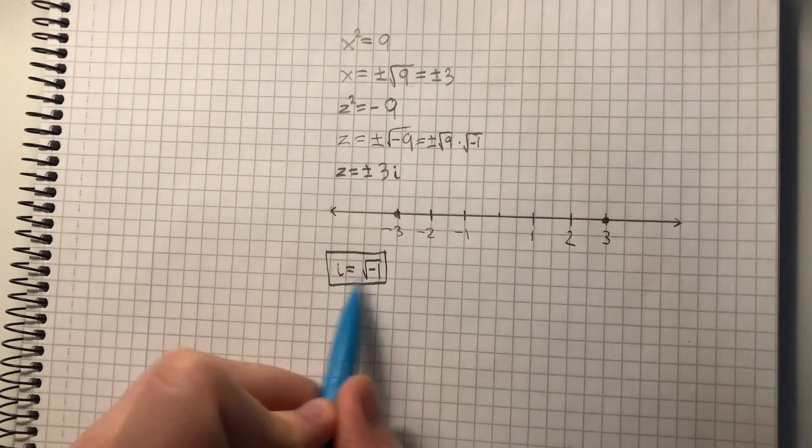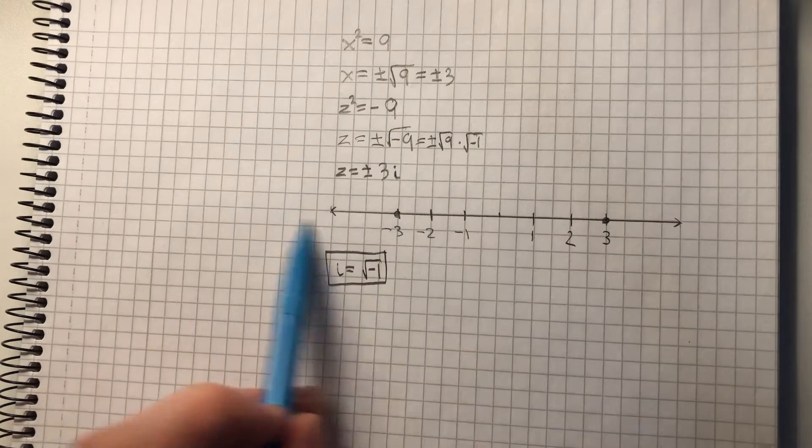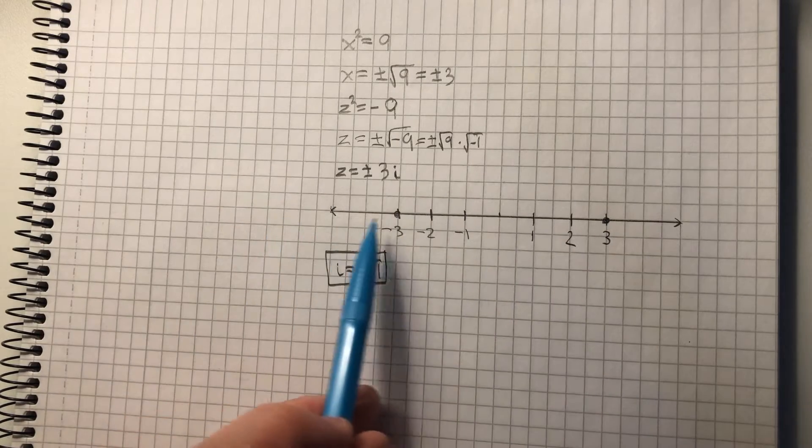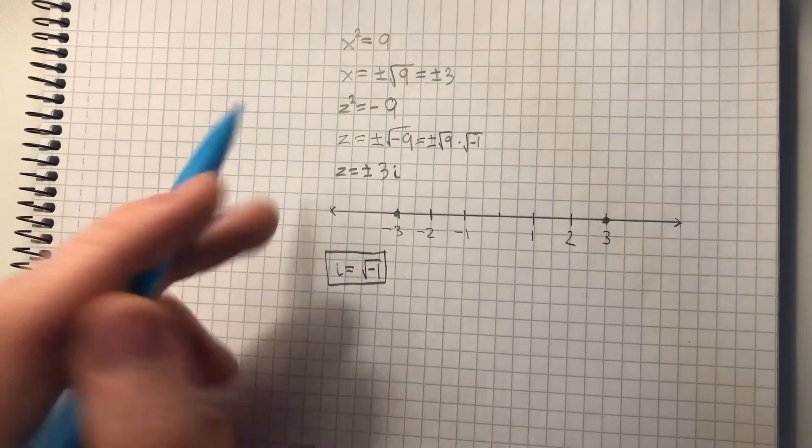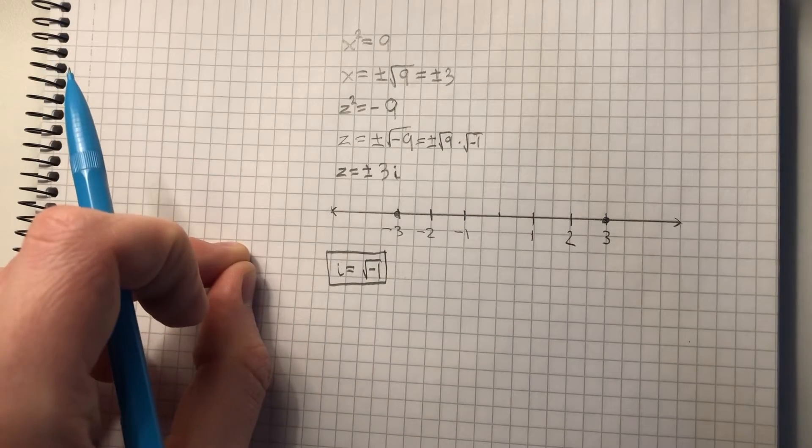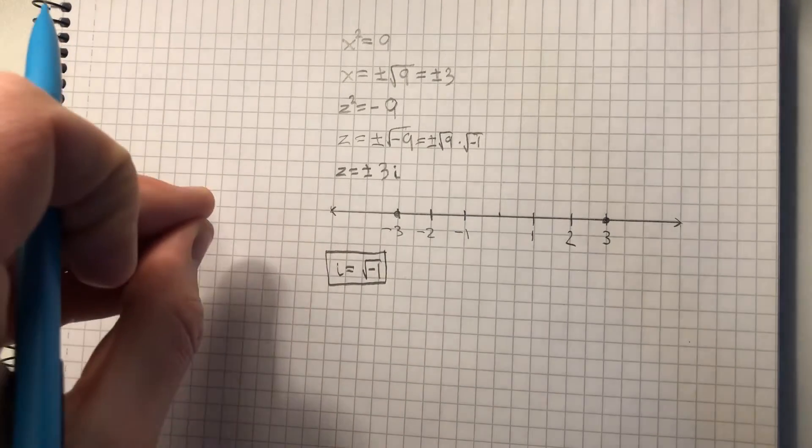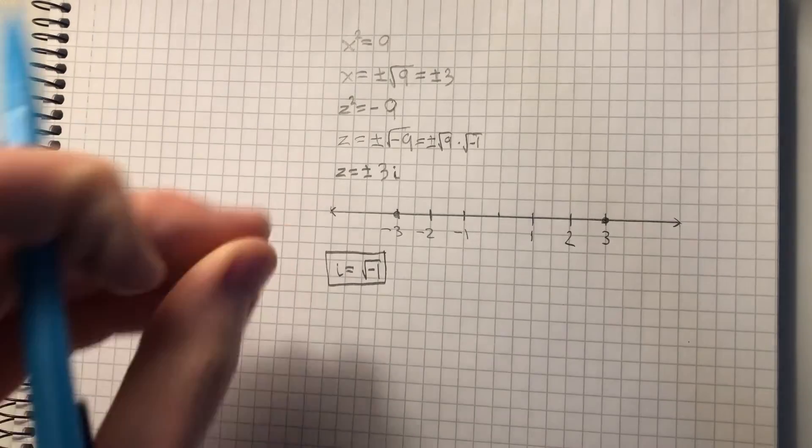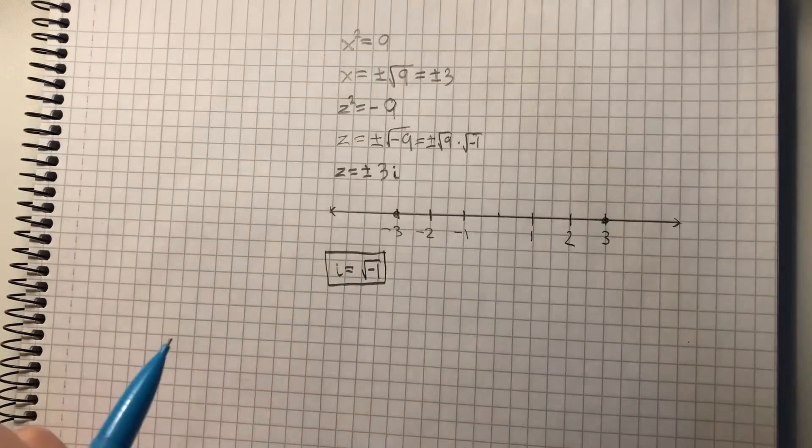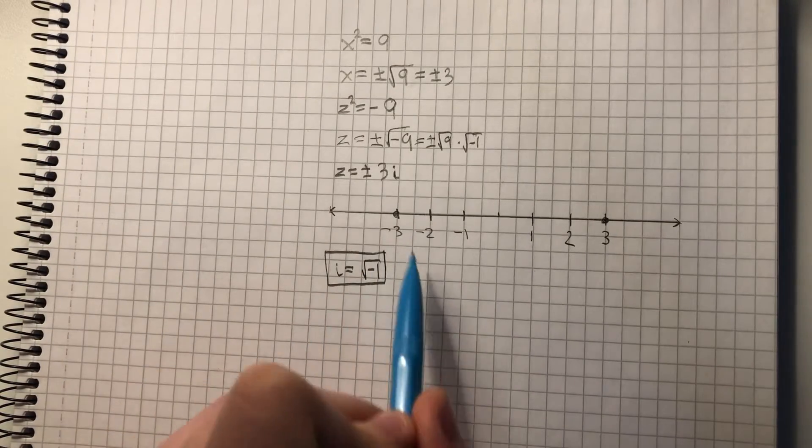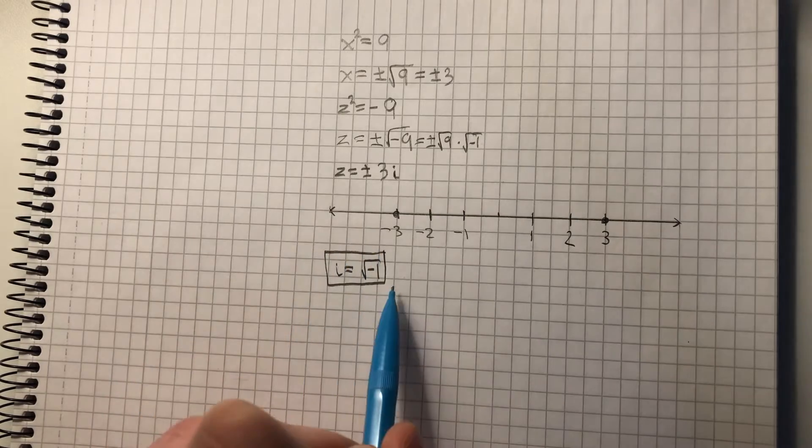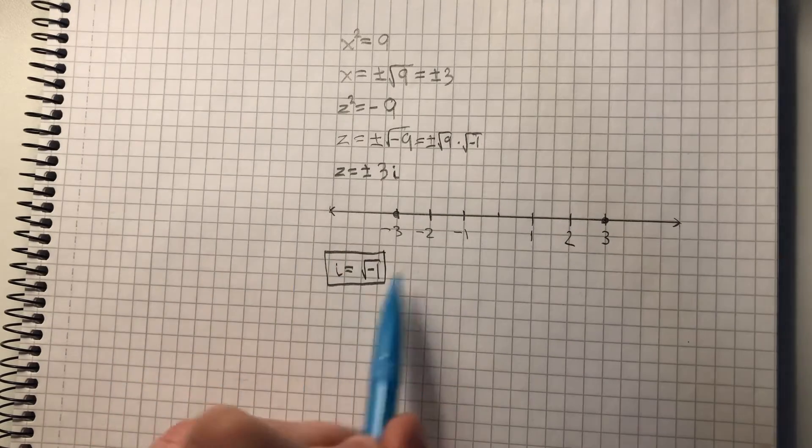This right here does not exist on the real number line. We cannot take one value times itself and then get a negative number. So we need to create a whole new number line just for this property right here.